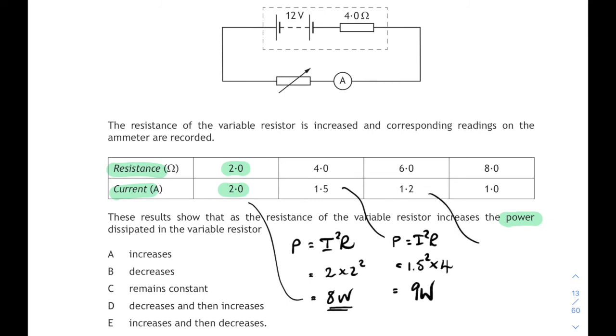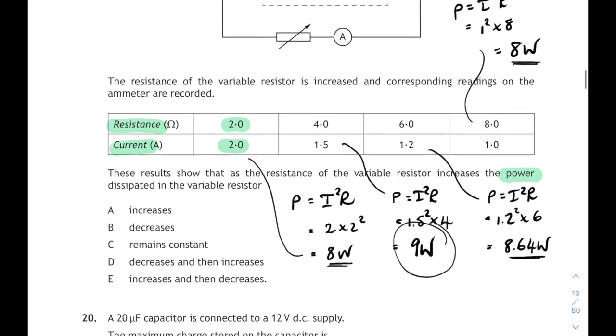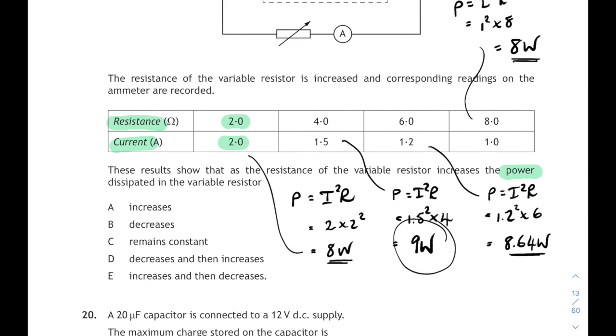But let's keep going. Just in case, let's check this one. P equals I squared R. The current of 1.2, so 1.2 squared times 6 gives us 8.64 watts. Power's going down again. Let's check the last column. P equals I squared R is 1 squared times 8. Well, that's just 8 watts. So the power has gone from 8 up to 9 and then back down again. The power increases and then decreases again. The power was at its greatest when the resistance was 4 ohms.